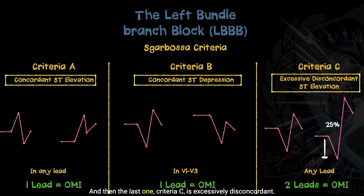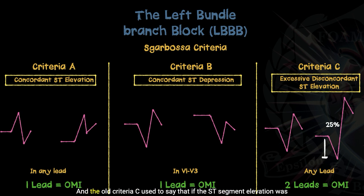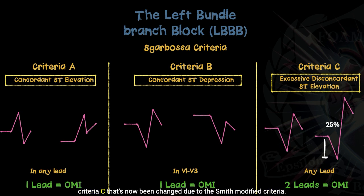The last one, criteria C, is excessively discordant. We already said that a negative deflecting QRS should have some degree of ST segment elevation or a return to the isoelectric baseline, but there's a predefined limit as to how much is allowed. The old criteria C used to say that if the ST segment elevation was greater than five millimeters or five small boxes, that was positive for criteria C.